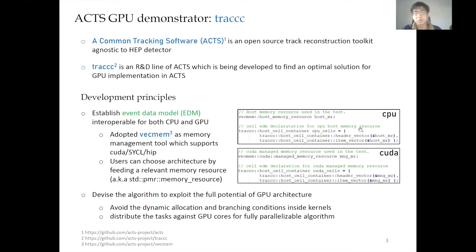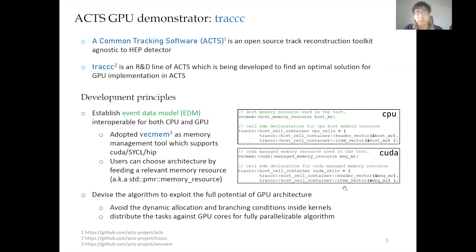For example, in the case of CPU, we just declare the memory resource for the CPU and feed it into the EDM object. And also for CUDA, we just declare the CUDA-specific memory resource and feed it into the cell EDM. The semantics are perfectly the same for different architectures.